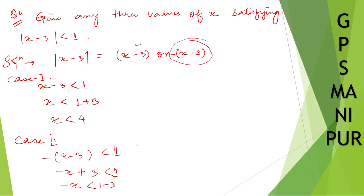So -x < 1 - 3, which will be -2. So -x < -2. If you cancel these two, the sign will change. Let us multiply by negative sign to both sides.